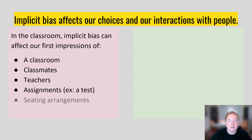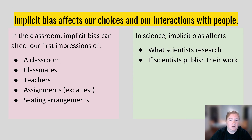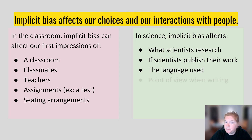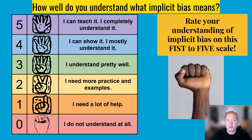In science, implicit bias affects what scientists decide to research, whether they publish their work and where, the language and words chosen, the point of view when writing, and which conferences or workshops to attend. So right now, how well do you understand what implicit bias means?